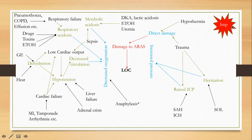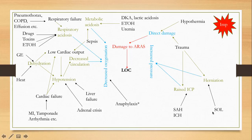Direct damage can result from hypothermia or direct trauma to the brain. Direct trauma can also cause herniation or raised intracranial pressure. Space-occupying lesions, subarachnoid hemorrhage, or intracerebral hemorrhage can cause raised intracranial pressure as well. These underlying pathologies — space-occupying lesions, hemorrhage, hypothermia, and trauma — all work through these mechanisms to damage the reticular activating system.